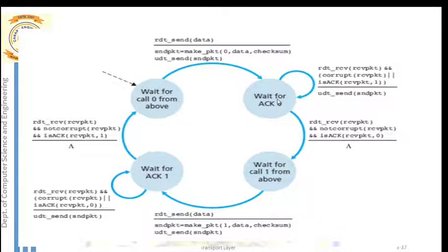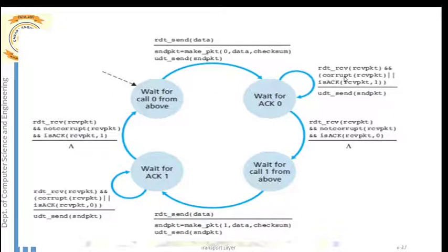After sending the packet, the sender moves to a new state: waiting for an acknowledgement. It is expecting a positive acknowledgement for the packet with sequence number zero. If a corrupted packet is received — a garbled acknowledgement — the sender cannot determine whether it is a positive or negative acknowledgement.